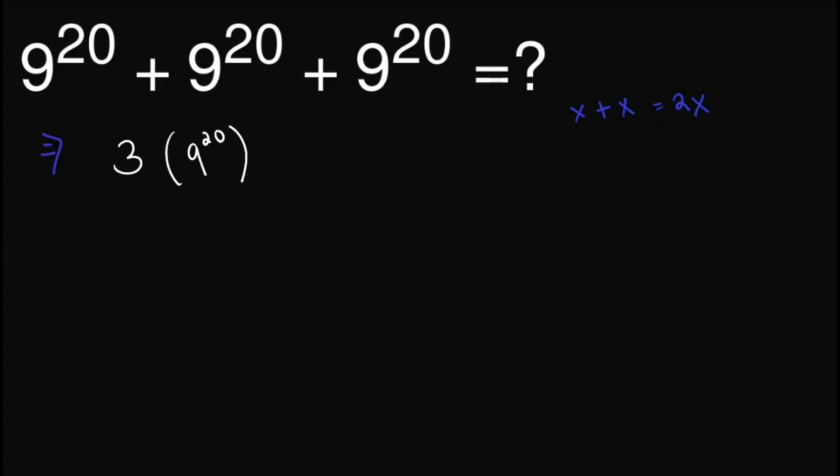Now from here, note that we can write 9 as 3 squared. So this would simply become 3 times 3 squared raised to 20.